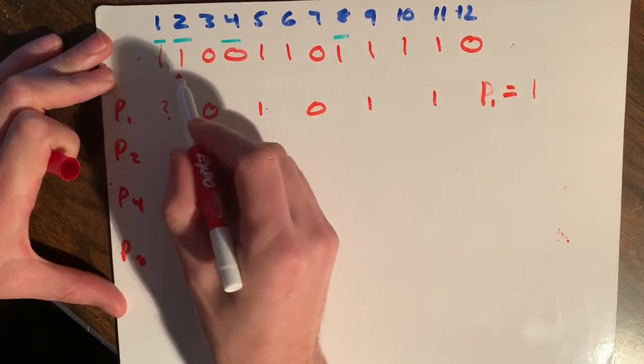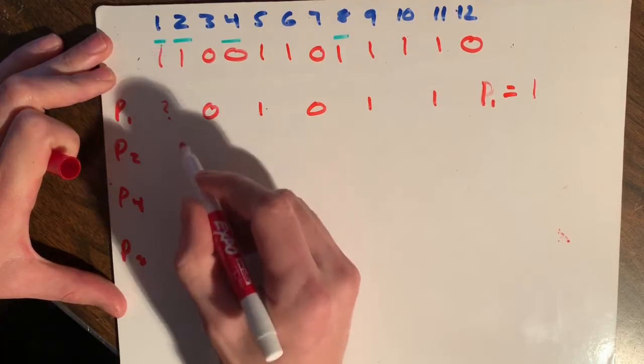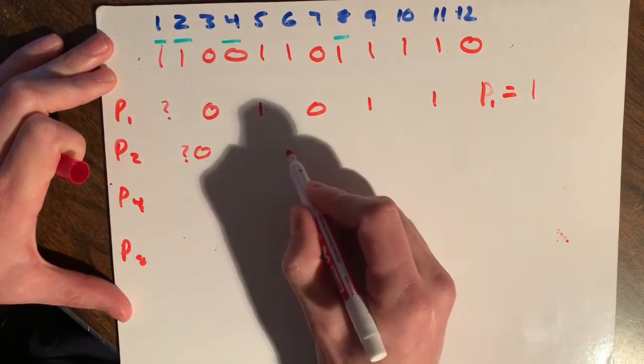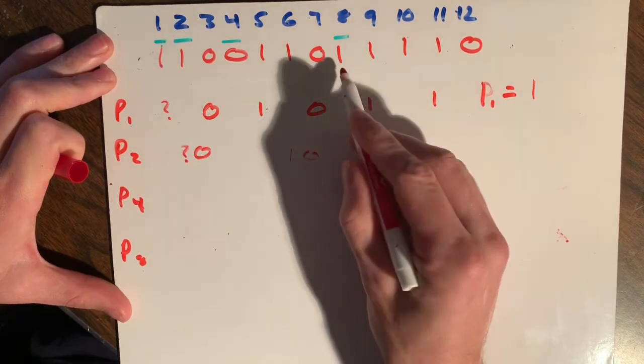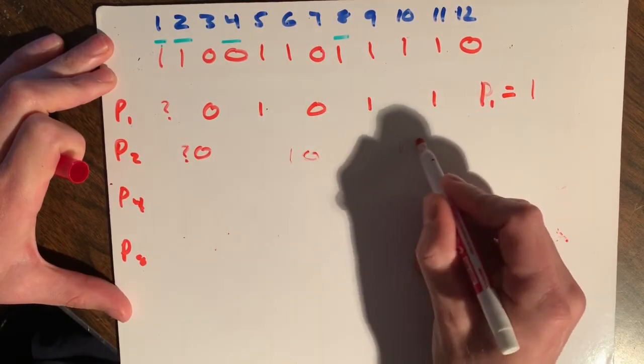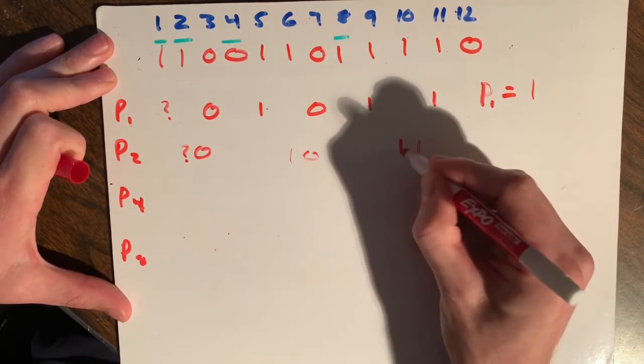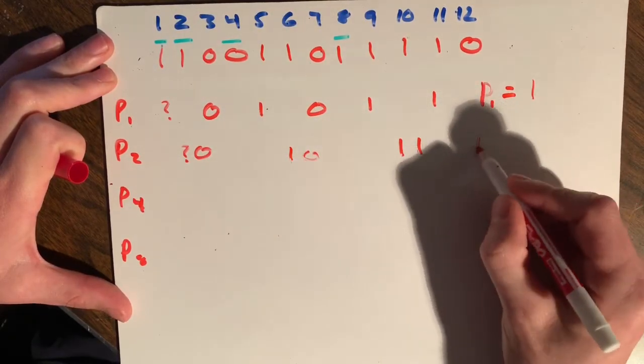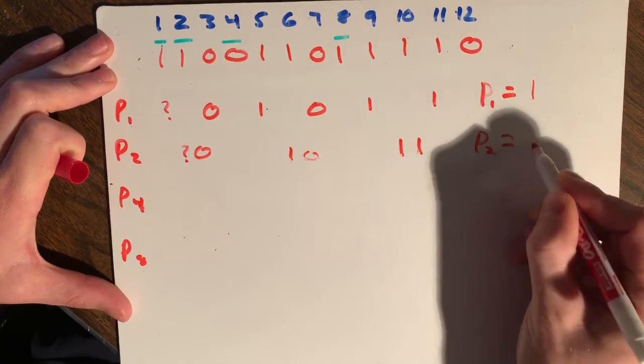Go down here. We're going to check two and skip two. First one's a question mark and a zero. Skip those two. We have one, zero. Skip those two. We have one, one. We skip. So it looks like we've got three ones here. And that would be odd. So P2 is a one.